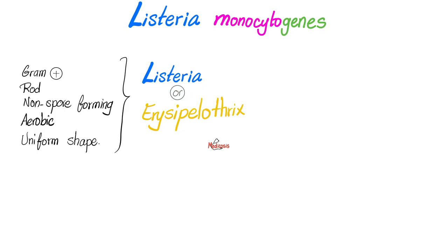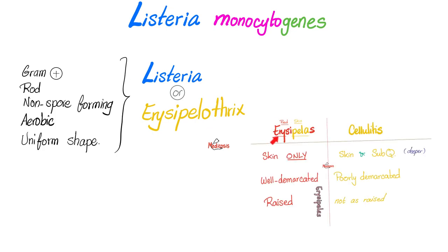Both Listeria and Erysipelothrix are gram-positive rods, non-spore-forming, aerobic, with uniform shape. Do you know what Erysipelo means? Remember Erysipelas, the disease caused by Streptococcus pyogenes? Ery means red, pella means skin — so this is a bacteria that's going to cause some skin infection.